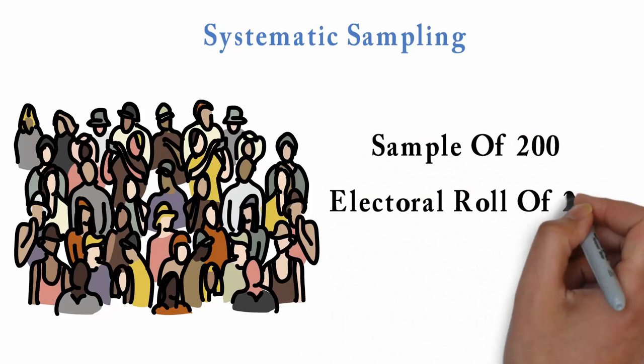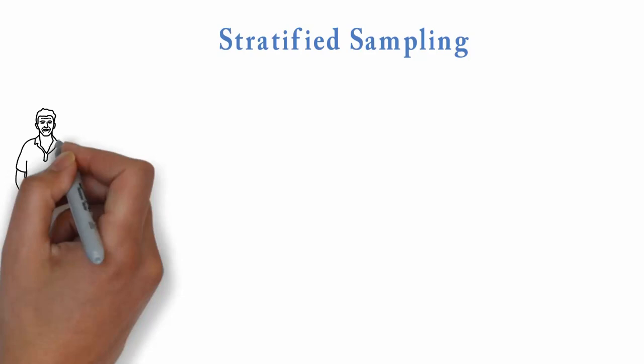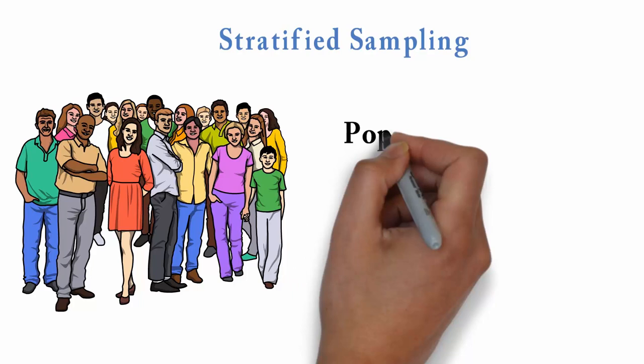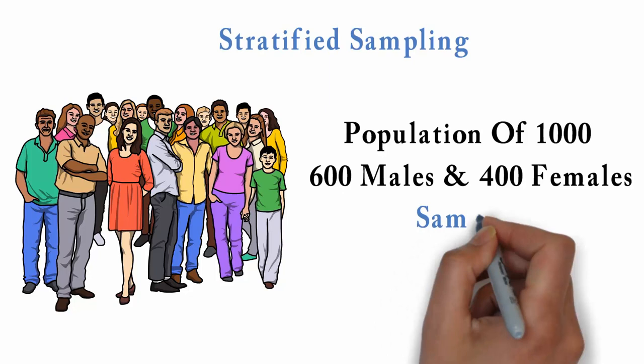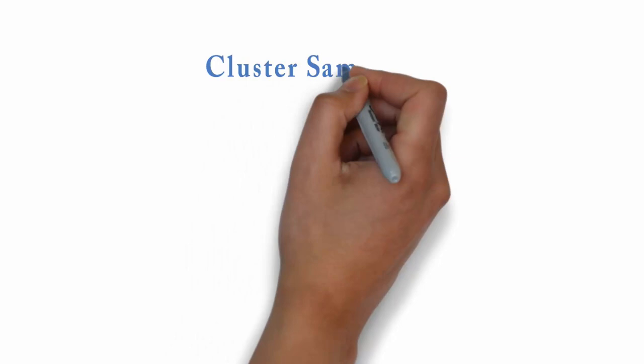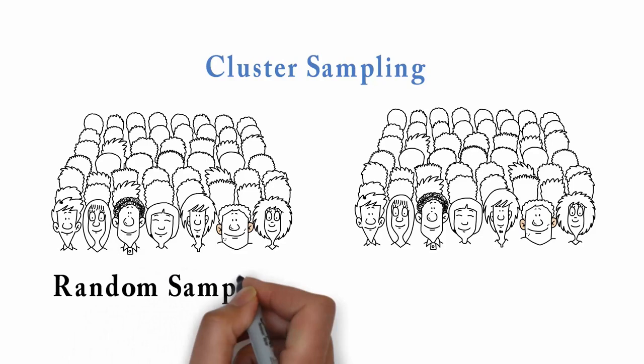In stratified sampling, the population is divided into groups according to some characteristics. For example, if a population of 1000 has 600 males and 400 females, we will sample 60% males and 40% females. For cluster sampling, the population is divided into identical groups. A random sample of each cluster is then taken.